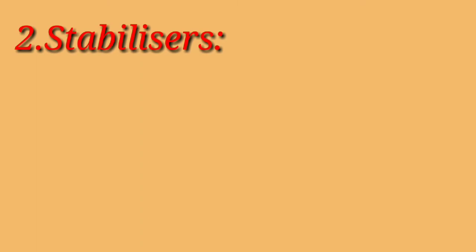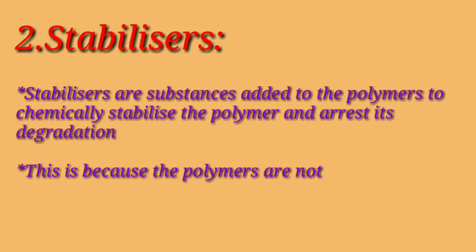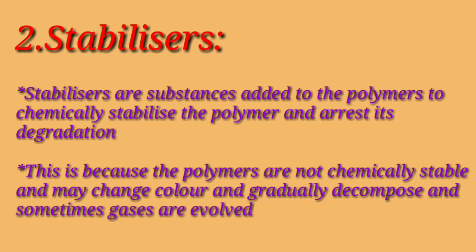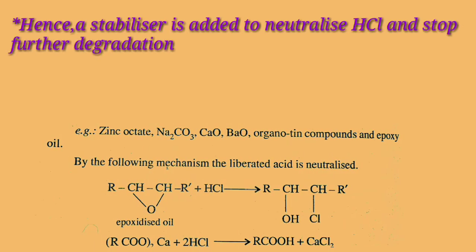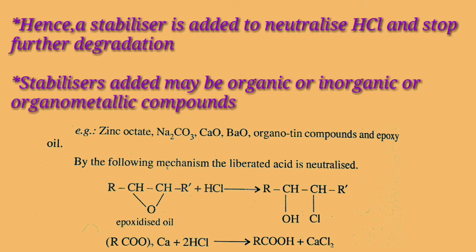Second is stabilizers. Stabilizers are substances added to polymers to chemically stabilize the polymer and arrest its degradation. Polymers are not chemically stable and may change color, gradually decompose, and sometimes evolve gases. For example, PVC is colorless but gradually changes color and is thermally unstable. At higher temperatures it evolves HCl, which accelerates degradation. Hence a stabilizer is added to neutralize HCl and stop further degradation. Stabilizers may be organic, inorganic, or organometallic compounds.